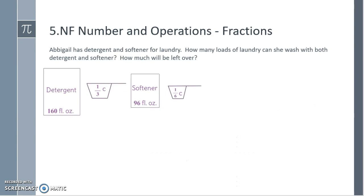Abigail has detergent and softener for laundry. How many loads of laundry can she wash with both detergent and softener? How much will be left over? Detergent comes in a 160 fluid ounce bottle and one laundry load is a third of a cup. Softener comes in 96 fluid ounces and each laundry load needs 1 sixth of a cup. We need to know how many cups of detergent that we have. There are 8 fluid ounces in one cup. So 160 fluid ounces divided by 8 fluid ounces is 20. So there are 20 cups in a bottle of detergent.